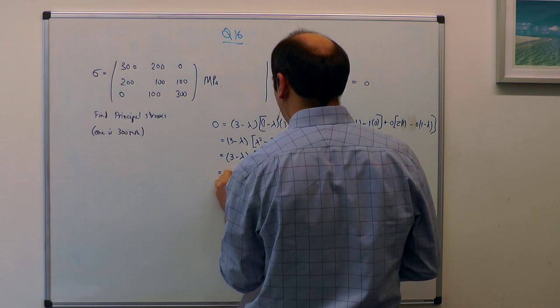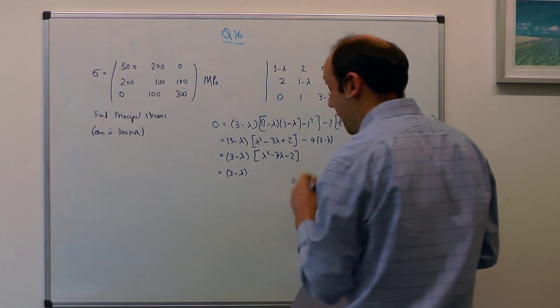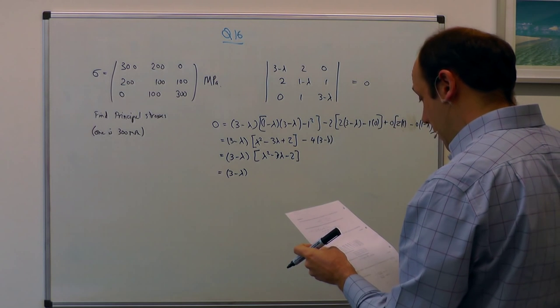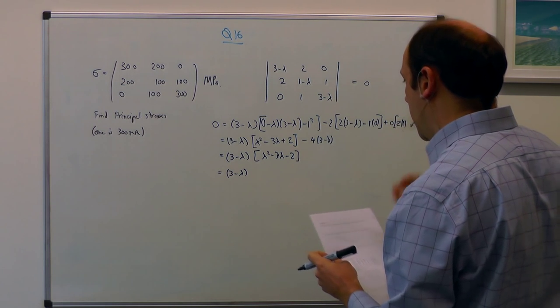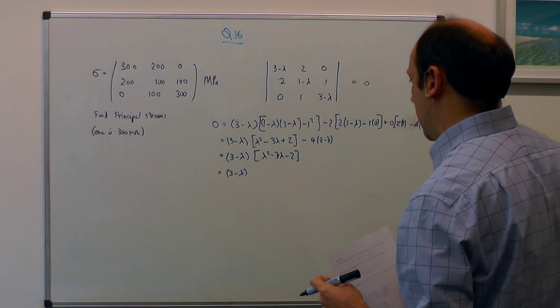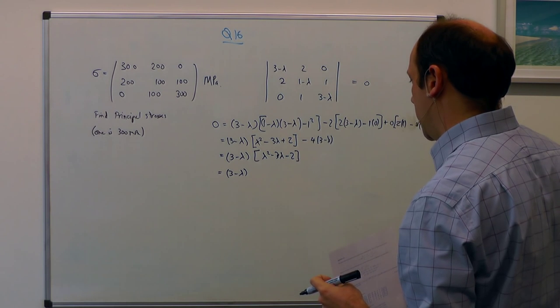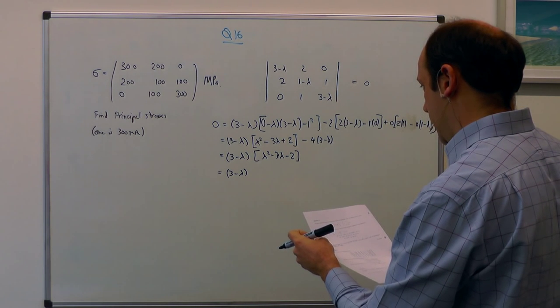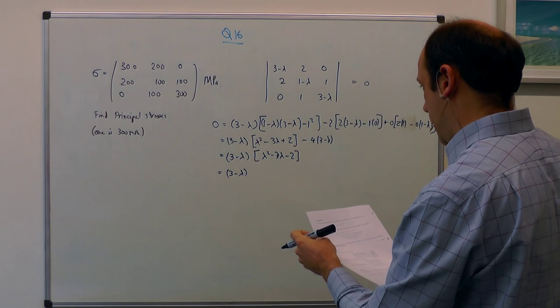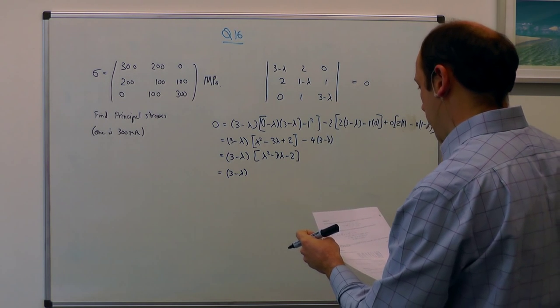And so I can say I have got 3 minus lambda, and I just have to solve this quadratic. Can I solve it by inspection? Lambda minus 2, lambda minus 1 looks plausible,